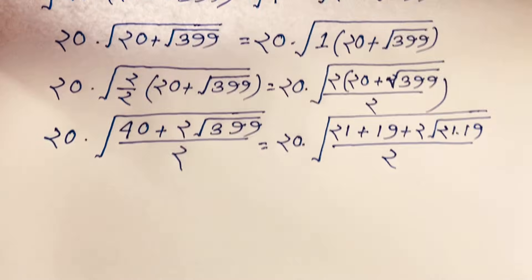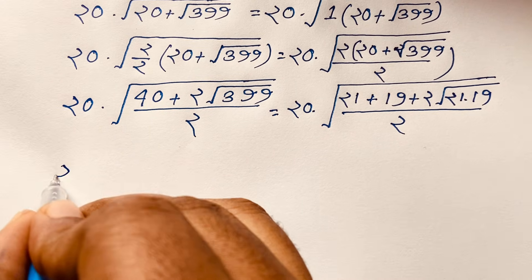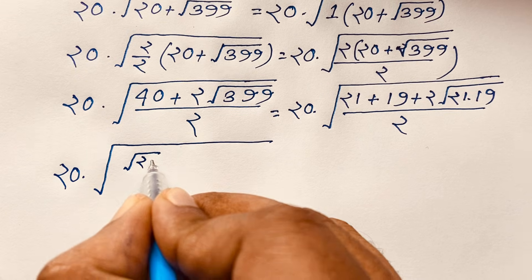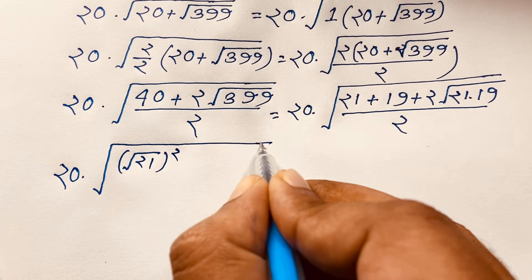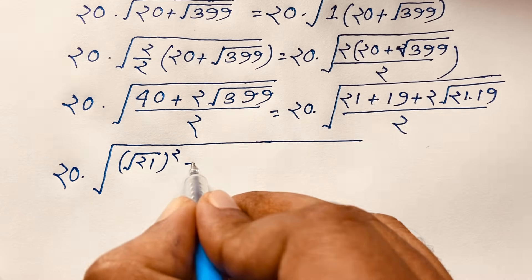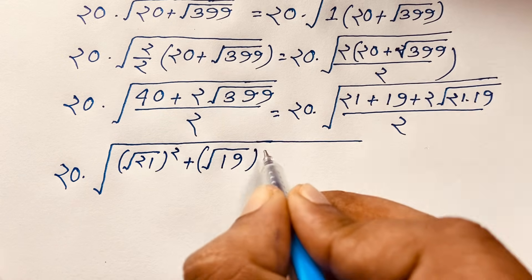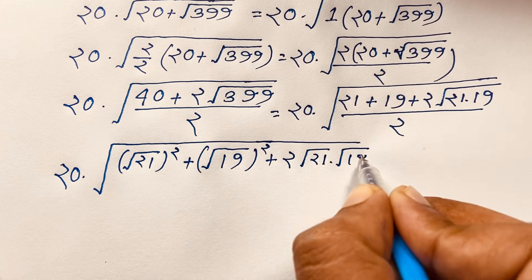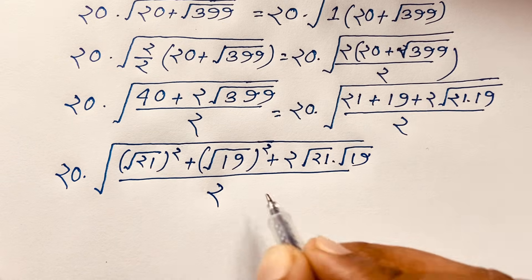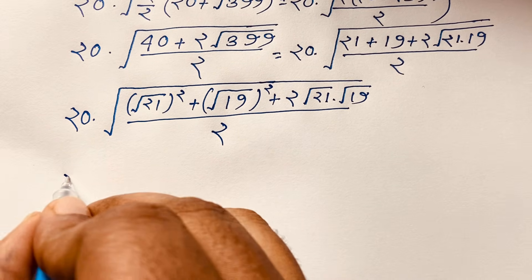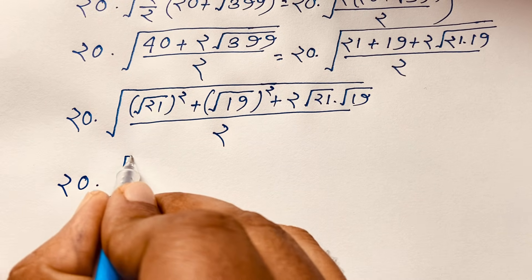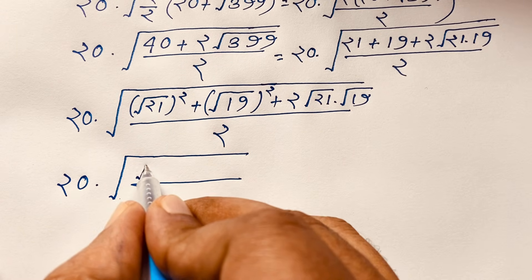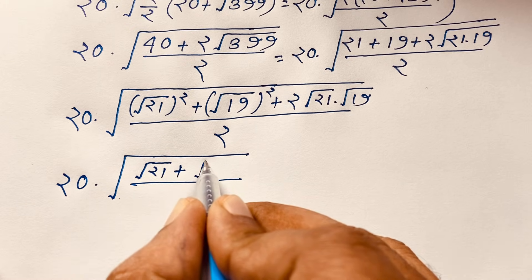At this moment, this radical math expression becomes 20 times square root of (square root of 21 squared plus square root of 19 squared plus 2 times square root of 21 times square root of 19), all over 2. Using the identity a squared plus b squared plus 2ab equals (a plus b) squared, this simplifies to 20 times square root of (square root of 21 plus square root of 19) squared.